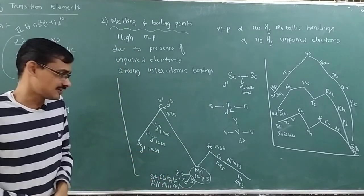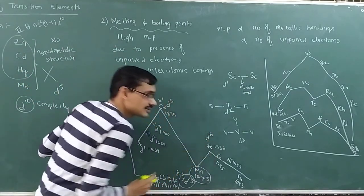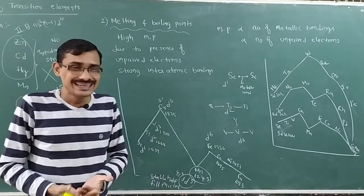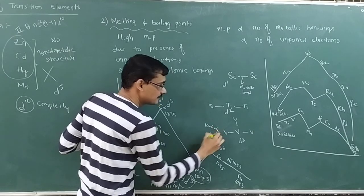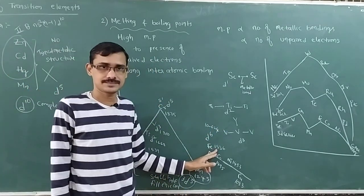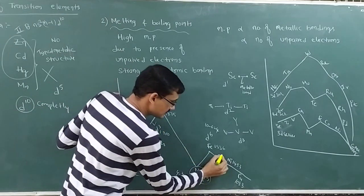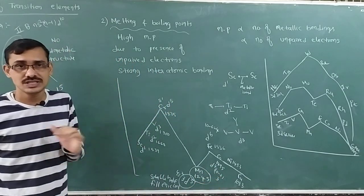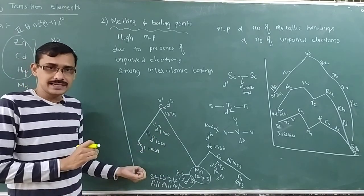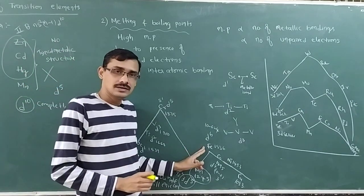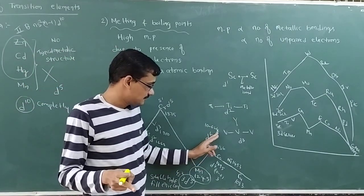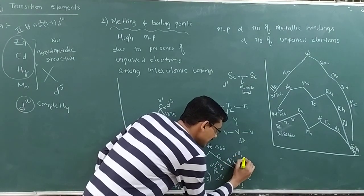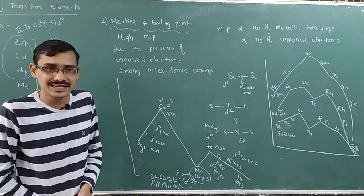After manganese, iron has D6 configuration. The number of unpaired electrons is calculated as 10 minus 6, giving 4 unpaired electrons. Its melting point is 1536 K. Cobalt has D7: 10 minus 7 gives 3 unpaired electrons. Nickel has D8: 10 minus 8 gives 2 unpaired electrons. So from iron onwards, unpaired electrons are decreasing, and melting points are also decreasing.